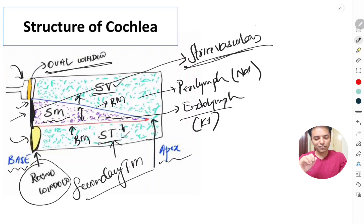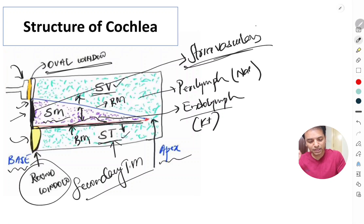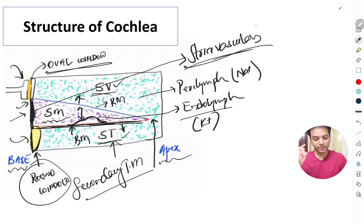So within all of this, where exactly is the organ of Corti located? The organ of Corti is located on the basilar membrane — that is its exact location.